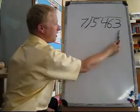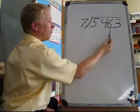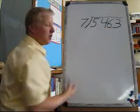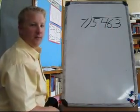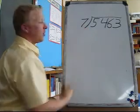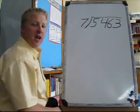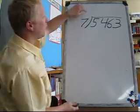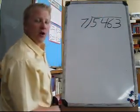We call this number here below the division sign the dividend. The 7 we call the divisor and the answer when we get it will be placed up here and is called the quotient.